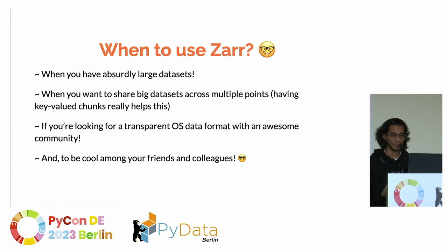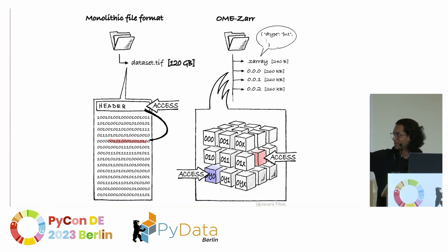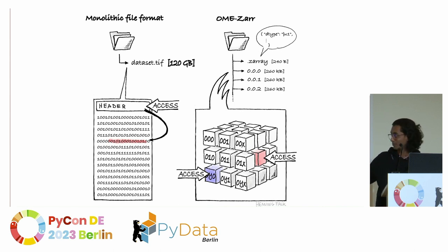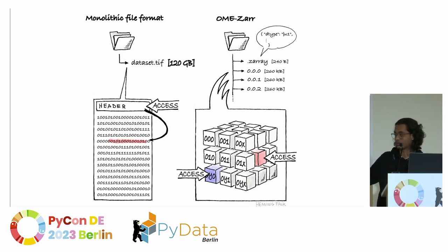When should you use ZAR? When you have absurdly large datasets. Say you have a 120-terabyte TIFF file — a big monolithic file — and you want to access just the middle part. You'd have to load the whole file into memory. But with a chunked format like ZAR, you can access that chunk using its key, work with it, and store it back, along with all your attributes.